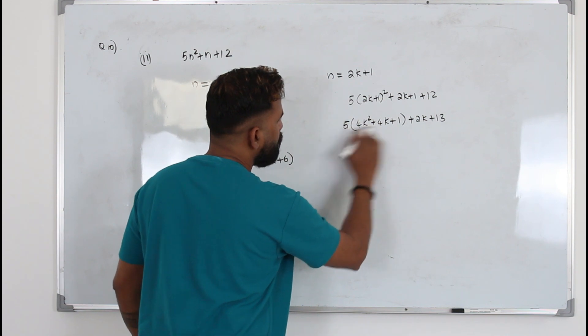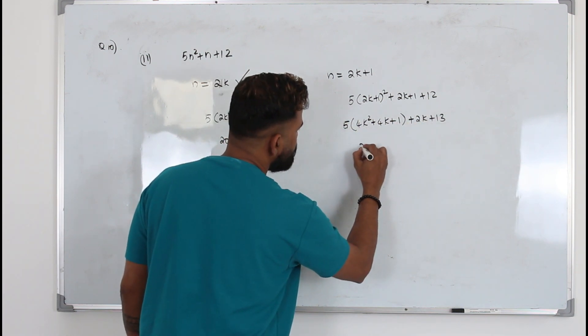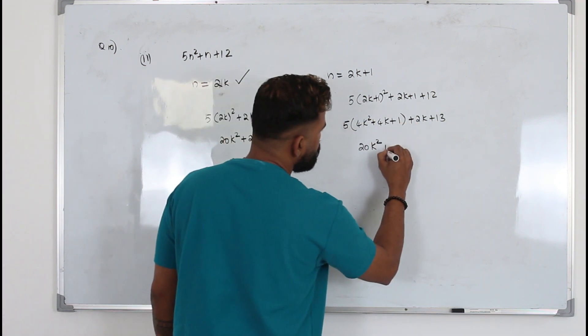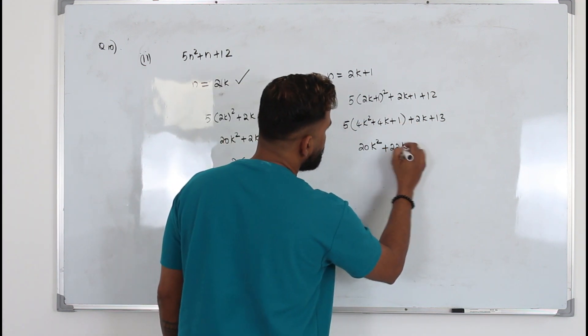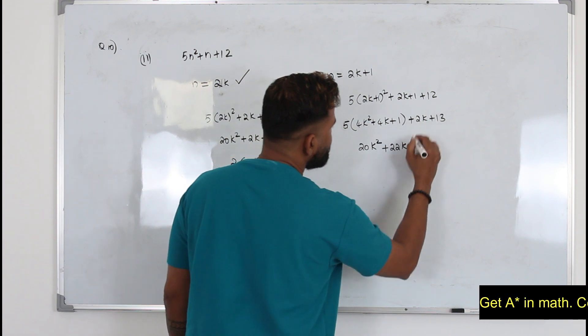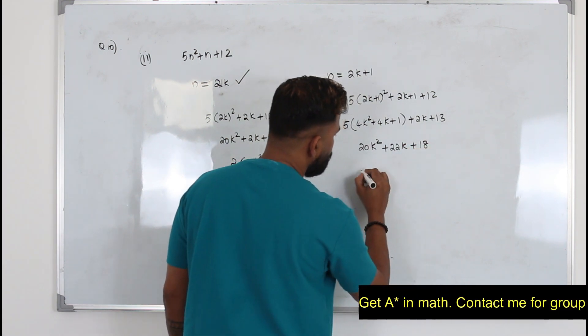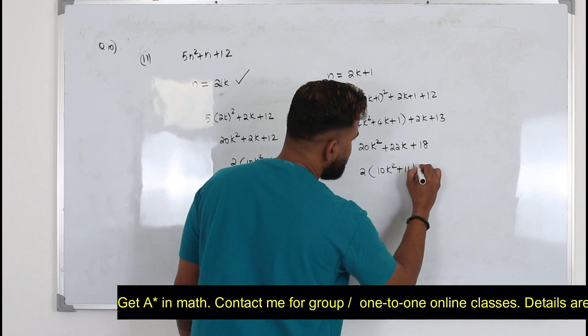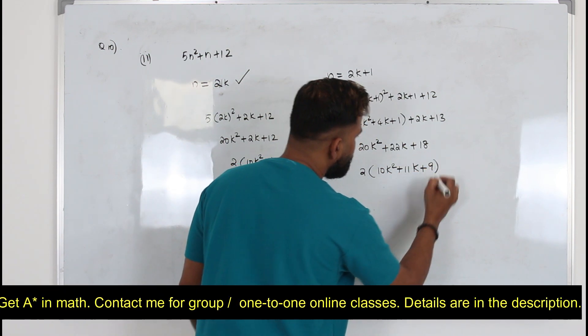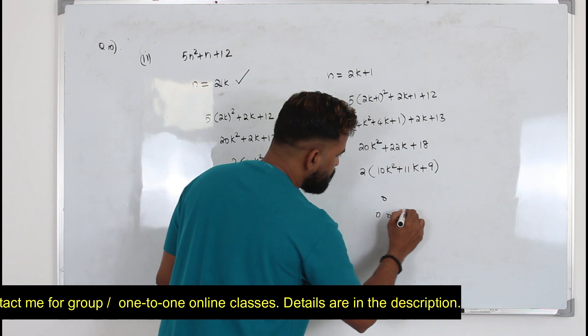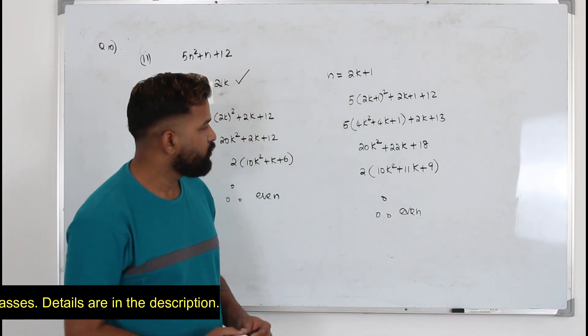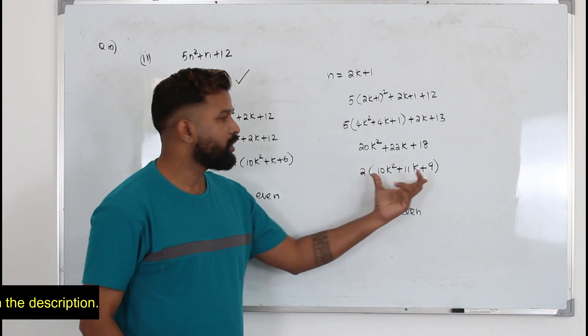When you expand it, 5 times (4k squared plus 4k plus 1) plus 2k plus 12 plus 1. Open the bracket and simplify: you get 20k squared plus 20k plus 2k, which is 22k, plus 5 plus 13, which is 18. So if you take 2 as a common factor, you get 2 times (10k squared plus 11k plus 9). Therefore, this is also an even number because we have written the expression as 2 times something.